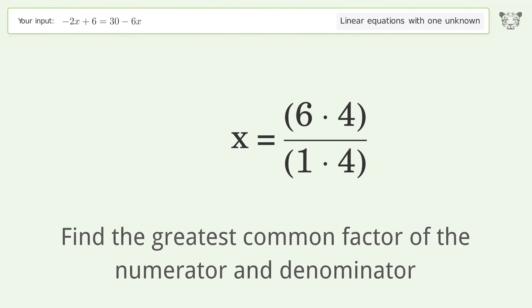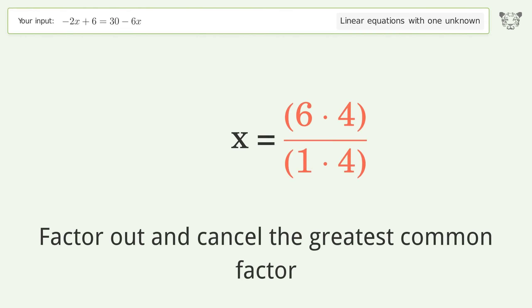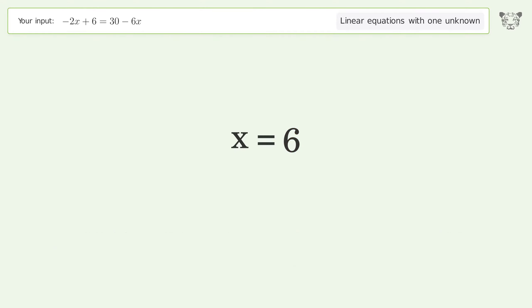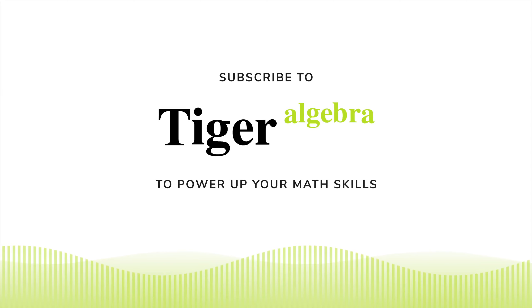Find the greatest common factor of the numerator and denominator. Factor out and cancel the greatest common factor. And so the final result is x equals 6.